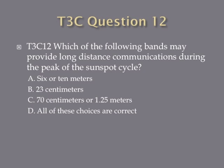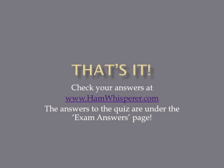And question 12. Which of the following bands may provide long distance communication during the peak of the sunspot cycle? A. 6 or 10 meters. B. 23 centimeters. C. 70 centimeters or 1.25 meters. D. All of these choices are correct. And that's it for the T3C lesson. Now that you're done with the quiz, go to hamwhisperer.com, go to the exam answers page and hit the T3C link to get the answers. And until next time in lesson 13, this is Andy, KE4GKP, saying 73. I hope to hear you on the air soon.